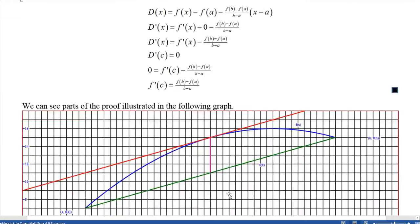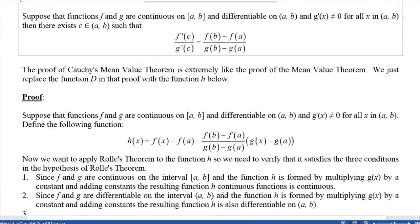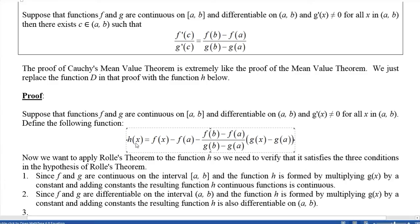Well, we're going to replace that with a slight variation on that here, and so we're going to get this function h(x). It's going to be f(x) - f(a) minus the thing that we're looking for: [f(b) - f(a)] / [g(b) - g(a)], and then that's times [g(x) - g(a)]. So let's look at that function and we're going to apply Rolle's Theorem to that.